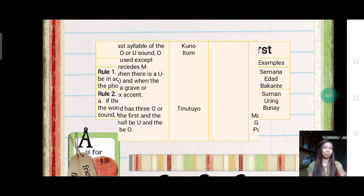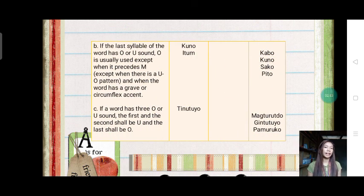The next is letter b. If the last syllable of the word has o or u sound, o is usually used, except when it precedes m, except when there is a u or o pattern and when the word has a grave or a circumflex accent. Letter o is used when the word has only o and u sound at the end of the syllable of the word and no other consonant will follow.